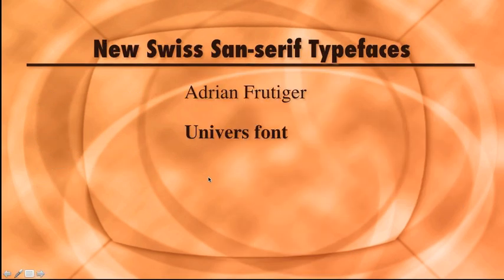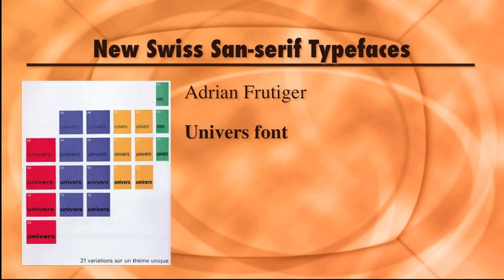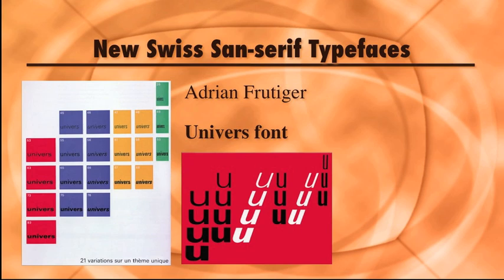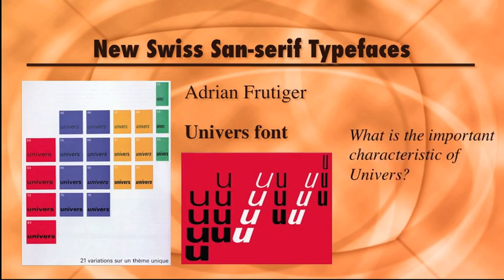Several new sans-serif type families were designed in the 1950s. Adrian Frutiger completed a visually programmed family of 21 sans-serif fonts called Universe. He worked for over three years on this typeface; over 35,000 matrices were created to produce all 21 fonts in the full range of sizes. This took an astounding 200,000 hours of machine engraving, retouching, and final hand-punching to create. Tell me what is the important characteristic of Universe.